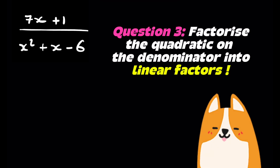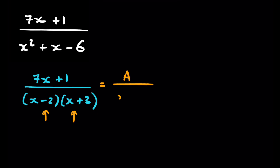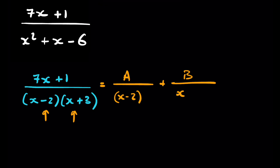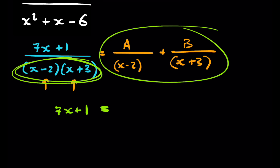Here's the third and final question. We have 7x+1 over a quadratic that factorises as (x−2)(x+3). These must be linear factors for this method to work. We separate it into A/(x−2) + B/(x+3). Multiplying both sides by the full denominator, the left gives 7x+1, and on the right the (x−2) cancels for A, leaving A(x+3), and the (x+3) cancels for B, leaving B(x−2).